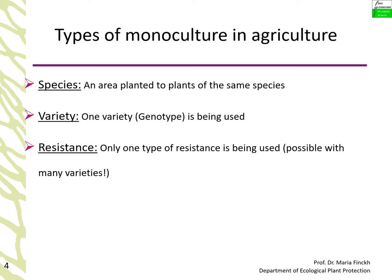Consider the types of monoculture used in agriculture. First, species monocultures — areas planted to plants of the same species. Second, within a species, one may use a single variety or several varieties, the latter providing diversity for resistances. Third, and less commonly considered, is a monoculture of resistance: several different varieties may all possess the same type of resistance, meaning from a pathogen's perspective, the stand is not truly diversified.